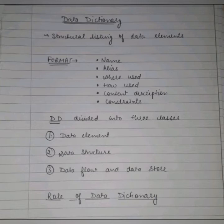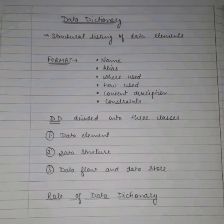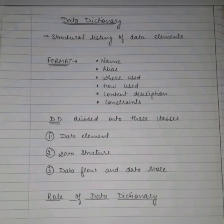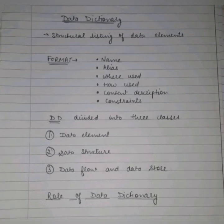The data dictionary is a data structure that stores metadata — and metadata means data about data. If the data dictionary is used only by the designer, user, administrator, or DBMS software, we call it a passive data dictionary. Otherwise, it is called an active data dictionary. The active data dictionary is automatically updated as changes occur in the database, while the passive data dictionary is updated manually.